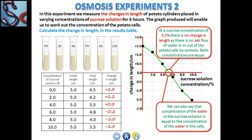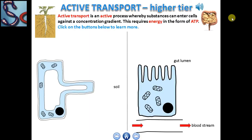We already discussed passive transport — the natural process where movement of molecules from higher concentration to lower concentration is called passive transport. Now we are studying active transport. It is an active process because substances can enter cells against the concentration gradient, and because of this against-push force, this process requires energy in the form of ATP.